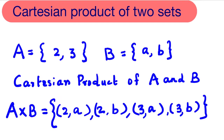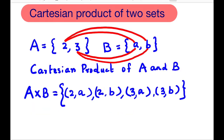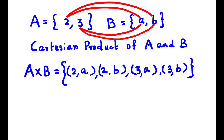Here, each element of set A is making an ordered pair with each element of set B to form the Cartesian product of A and B. You can notice that in each of the ordered pairs, the elements of set A come first and the elements of set B come second.